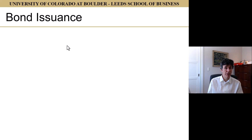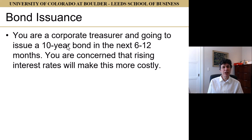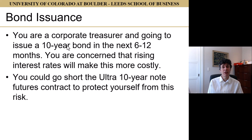The other place we use bond futures is for bond issuance hedging. Imagine we're a corporate treasurer going to issue a 10-year bond in the next 6 to 12 months. We've decided we're issuing the bond and raising capital, but we don't know exactly when. We're concerned that between now and when we issue, interest rates are going to go up, making it more costly. So we can go short the ultra-10-year or 10-year note futures to protect ourselves. If interest rates go up, we make money in our margin account, and that money offsets the additional interest we'll have to pay when we issue the bond.